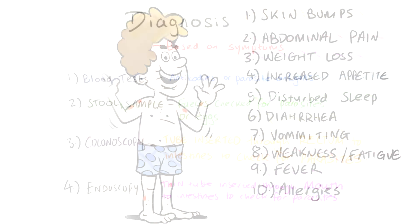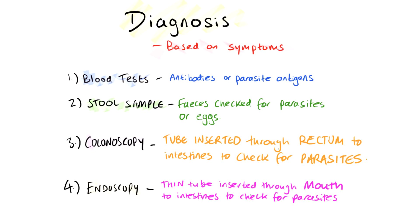To diagnose a parasite, doctors usually need to perform various tests, but they must also know your current medical conditions and your travel history in addition to your symptoms. The first thing a doctor could do is a blood test, and this could indicate antibodies or parasite antigens. Fecal exams or stool samples are done whereby usually three samples of stools are taken on different days and they are examined for parasites or parasite eggs.